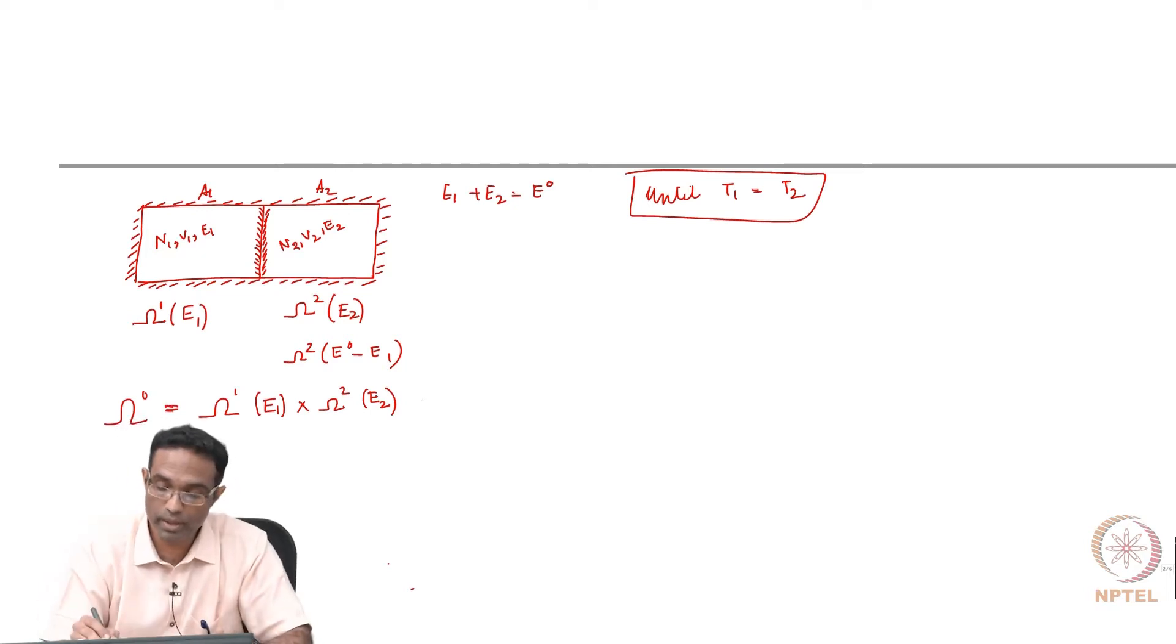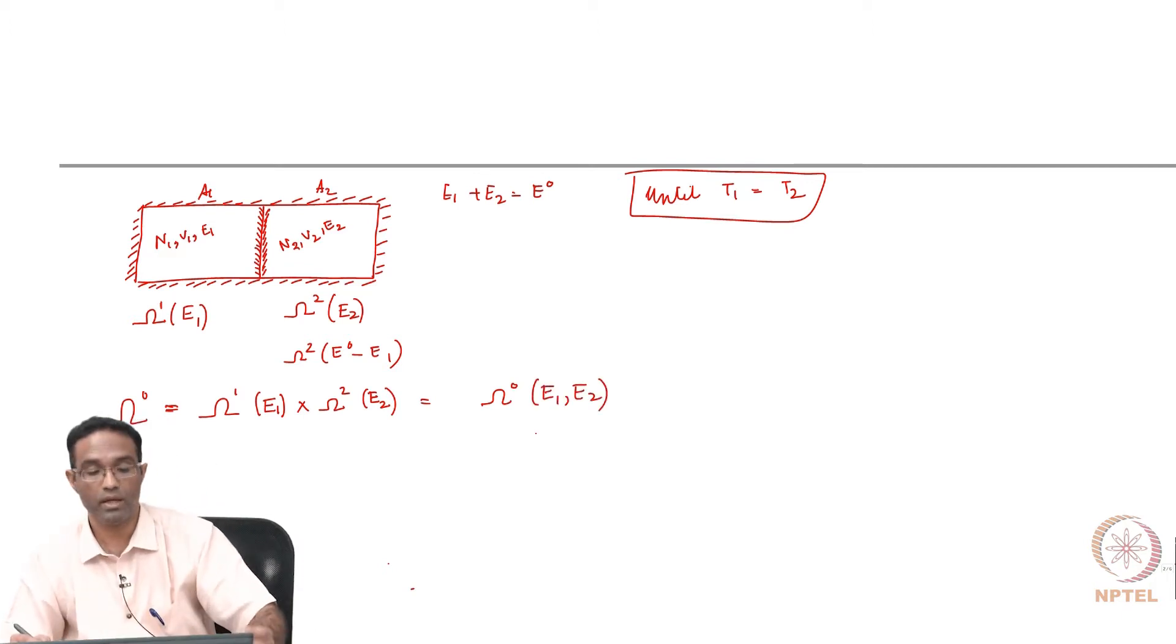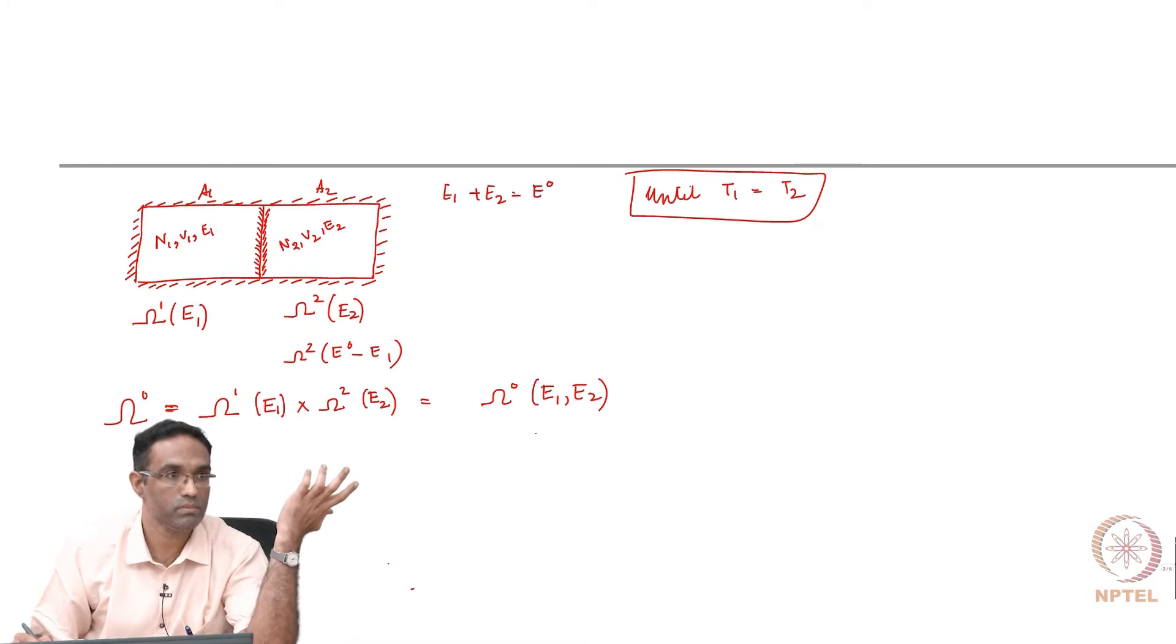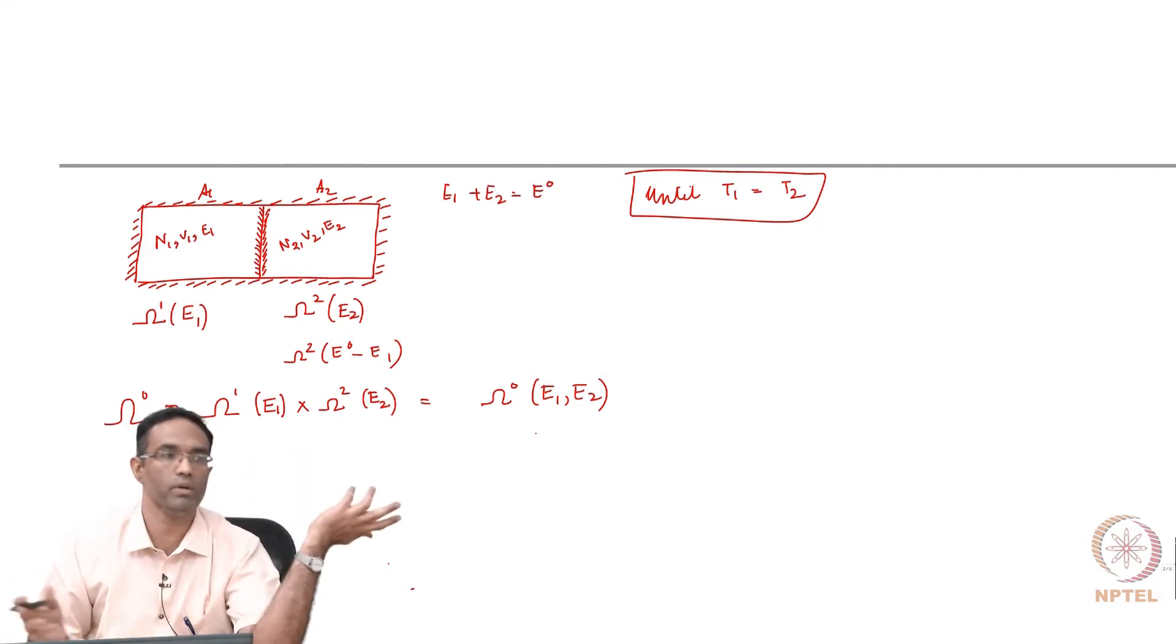Obviously, this omega naught is a function of say E1 E2. The question that we ask now is when will this energy transfer stop, or what will be the value of E1 or E2 at which no more energy exchange between the two is going to take place.